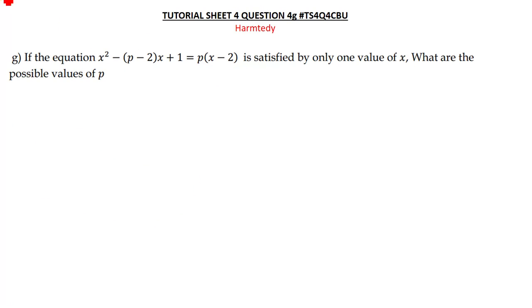So having known to say our discriminant is supposed to be equal to 0, let us first simplify this expression. So we know to say we have x squared, then we have negative p minus 2, and then we have x this side, and then plus 1. We also have,